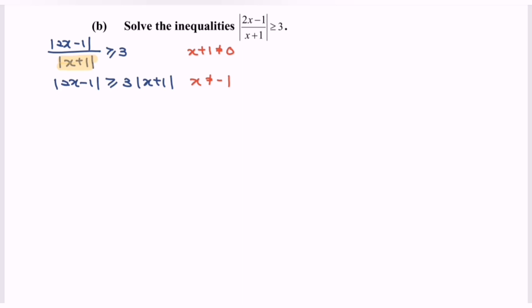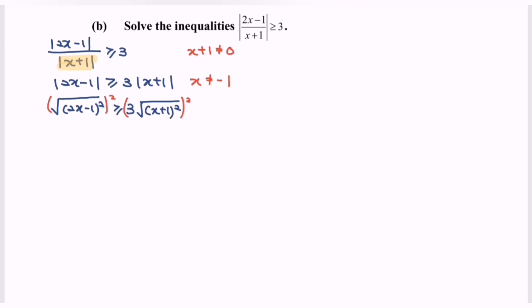Based on the situation, the modulus is the square root of (2x minus 1) squared, greater than or equal to 3 multiplied by the square root of (x plus 1) squared. So what we have to do is square both sides. Squaring both sides, we will have (2x minus 1)² greater than or equal to 9 multiplied by (x plus 1)². So now we expand the situation.